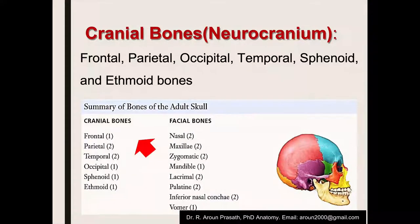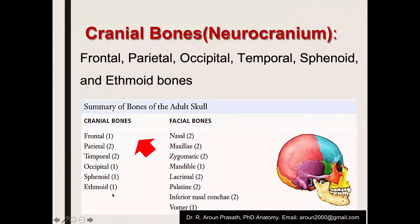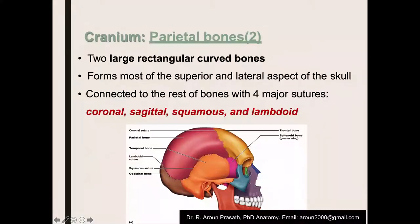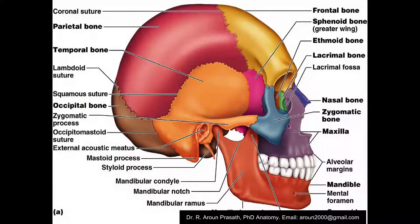There is one frontal bone, two parietal bones, two temporal bones, one occipital bone, one sphenoid bone, and one ethmoid bone as cranial bones. The facial bones include two nasal bones, two lacrimal bones, two palatine bones, inferior concha, and vomer bones.